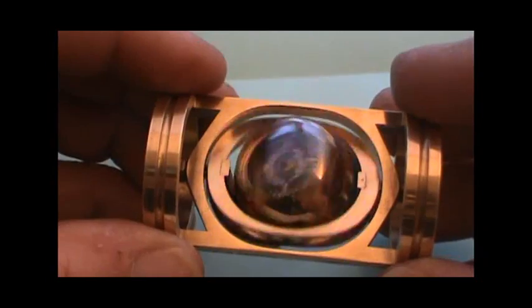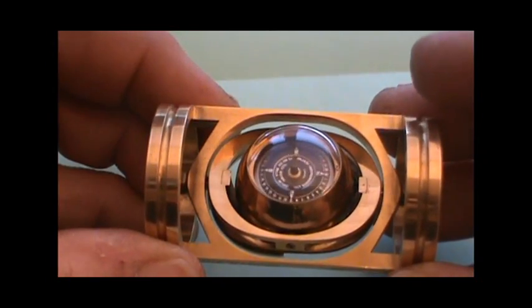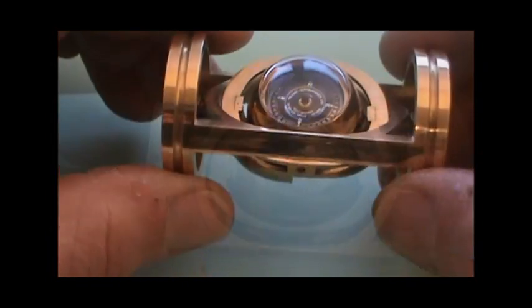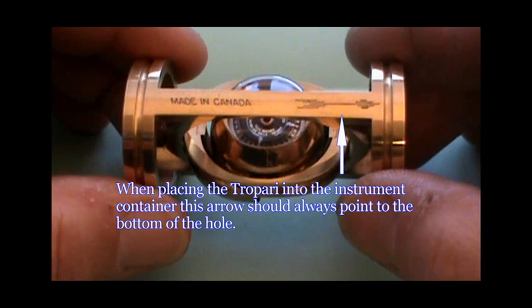Now that you have placed time on the instrument, it is ready to be placed inside the instrument container. On the side frame of the instrument is an arrow. This arrow must point to the bottom of the hole when placed inside the instrument container.